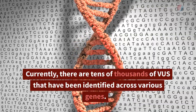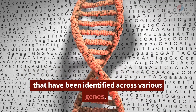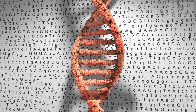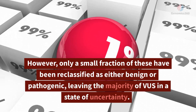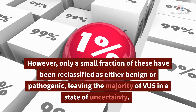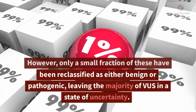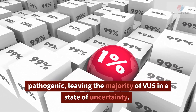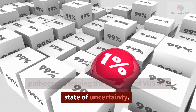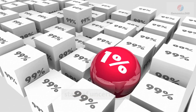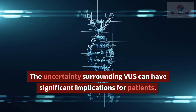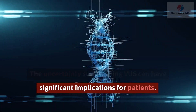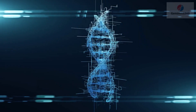Currently, there are tens of thousands of VUS that have been identified across various genes. However, only a small fraction of these have been reclassified as either benign or pathogenic, leaving the majority of VUS in a state of uncertainty.